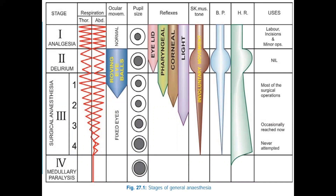Plane 2 spans from cessation of eyeball movements to beginning of paralysis of intercostal muscles — the patient is now unable to breathe independently. The laryngeal reflex is lost, although inflammation of the upper respiratory tract increases reflex irritability. The corneal reflex disappears. Secretion of tears increases, which is a useful sign of light anesthesia. Respiration is automatic and regular, and deep breathing in response to skin stimulation disappears — there is no change in respiratory pattern with skin incision.